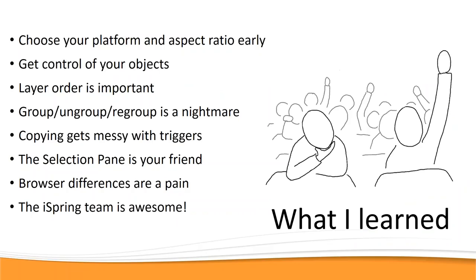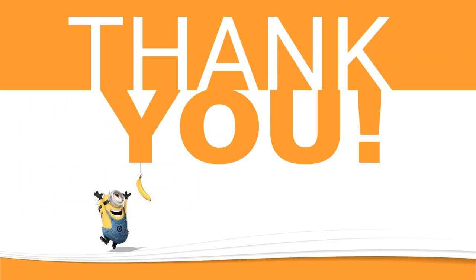Lessons learned: choose your platform and aspect ratio early — very, very important. Get control of your objects and shapes — use the selection pane. Understand the order of things on the canvas: once you start grouping, ungrouping, and regrouping after assigning actions and animations, it becomes a nightmare. Plan ahead. Copying stuff from one slide to the next with triggers gets messy. Browser differences are a pain. And the iSpring team is awesome — they answered every question, and some of my questions were so dumb they were embarrassing, but they never embarrassed me.